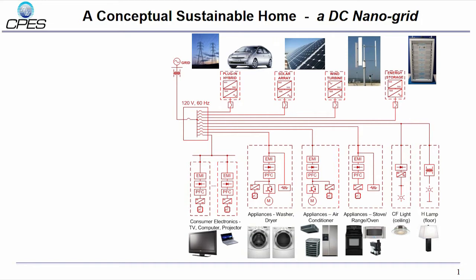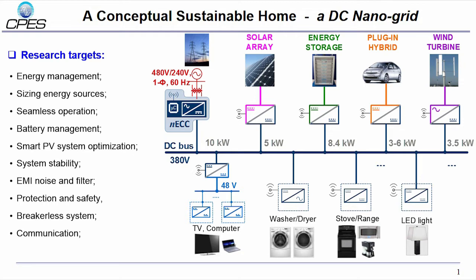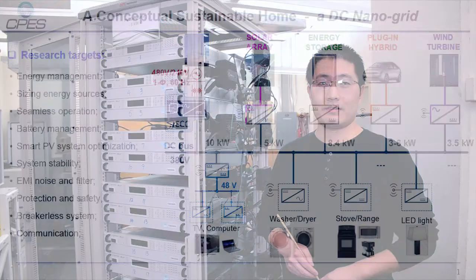To integrate all the sources and loads together, an AC nano grid nearly all the components need AC to DC rectifier or DC to AC inverters, which is complicated and higher cost. While the DC nano grid shown in this picture will easily integrate all the sources and loads with minimum cost and higher efficiency. All the grid interface functions will be lumped into one converter, the ECC converter, and all the other sources and loads only need one stage converter to achieve all the target functions.